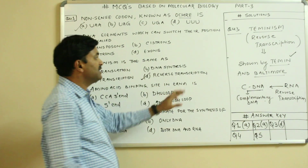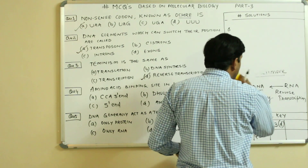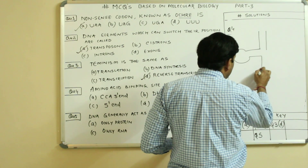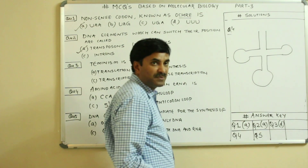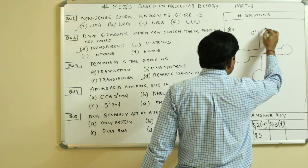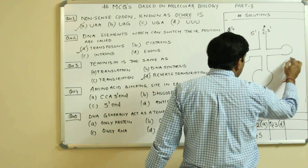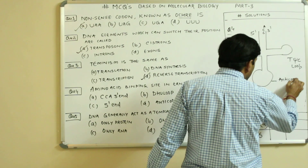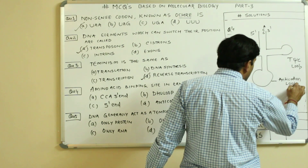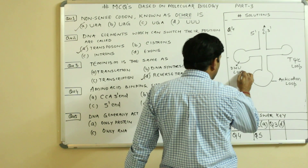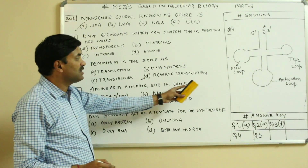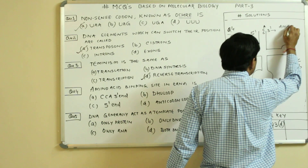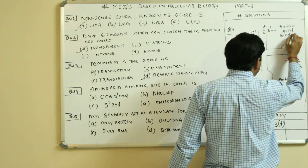Amino acid binding site in tRNA. A tRNA has four major arms: the 5'-end, the CCA 3'-end, the TΨC loop, the anticodon loop, and the DHU loop. The 3'-end having the CCA sequence is the amino acid binding site.